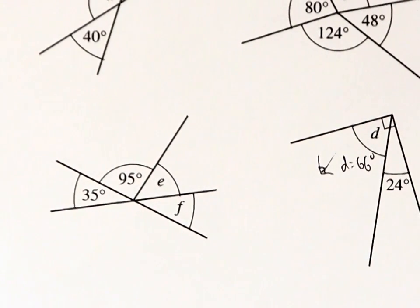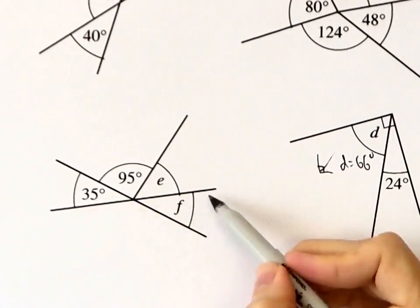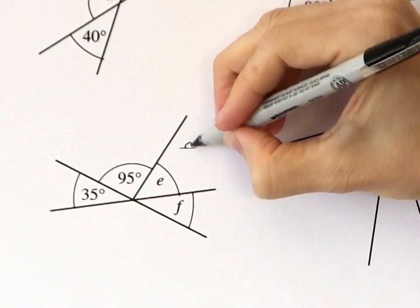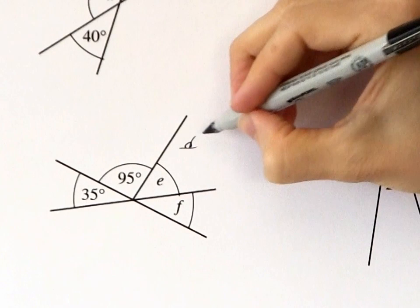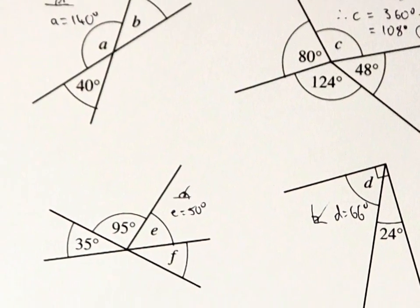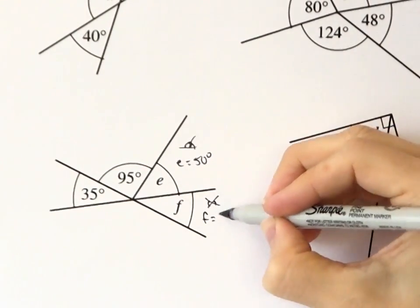Last set. E is on a straight line with these other two. So what would it have to be to make them all add up to 180 degrees? E must be 50 degrees. And then F can be solved either way, just like B earlier. It's got to be 35 degrees.